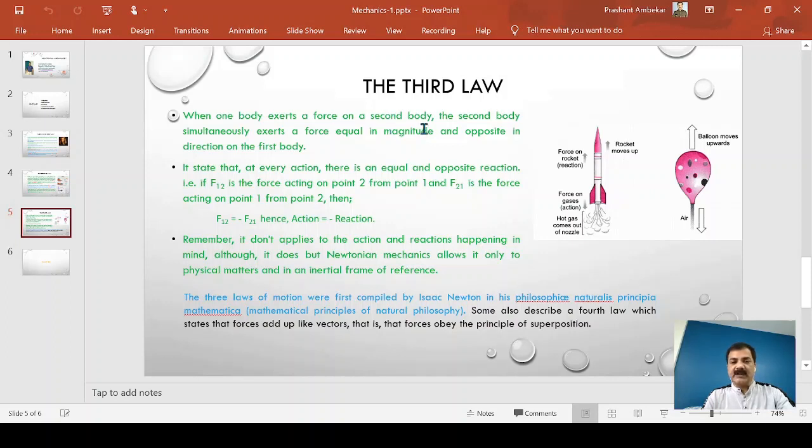So, when one body exerts a force on the second body, the second body simultaneously exerts a force on the first body, which is equal in magnitude and opposite in direction. So, the law can be stated as: at every action, there is an equal and opposite reaction. Now, suppose F12 is the force acting on point 2 or mass 2 from point 1 or mass 1, and F21 is the force acting on point 1 or mass 1 from point 2 or mass 2, then F21 is equivalent to minus F12. So hence, the action is equal to minus of reaction. Remember, it doesn't apply to the action and reaction happening in your mind. Although it does, but Newton's mechanics allows only to physical matters and specifically in an inertial frame of reference.